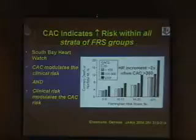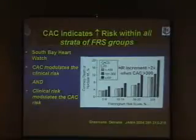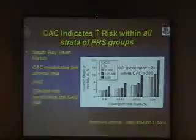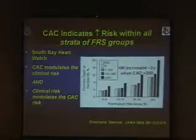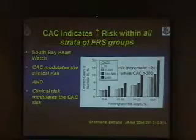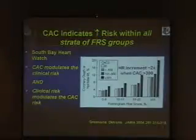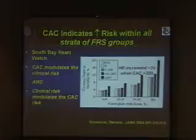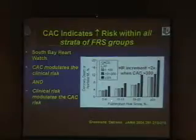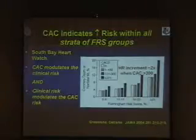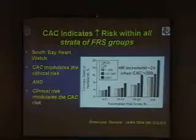Coronary calcium indicates increased risk within all strata of Framingham risk score groups. This South Bay Heart Watch data from Dr. DiTrona's group shows that across strata of Framingham risk scores, high calcium scores tend to indicate higher risk — a hazard ratio increment of about two-fold when the calcium score exceeds 300. But there are two ways to interpret this: the calcium score modulates the risk, and also the clinical risk modulates the atherosclerosis. So I have misgivings about really demoting risk factors in this setting.